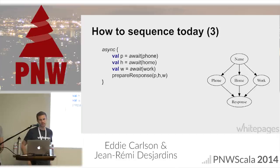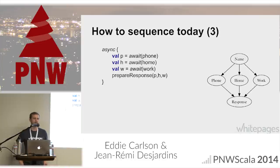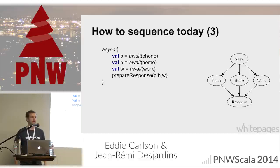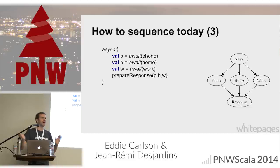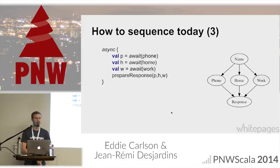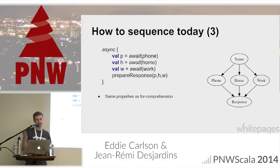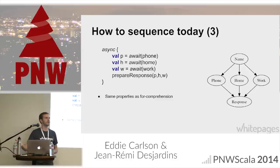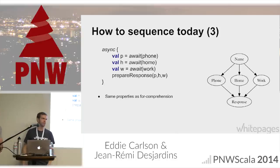The third way to sequence is async/await — a newer deal. The idea is to provide a way to write programs that look sequential but are actually doing concurrent things in the background. It allows you to clean up a lot of your code because flatMap and map aren't littered everywhere; you can grab a value by just awaiting and use it as the actual value. But we have the same problem — it does not fail fast. It has the same properties as the for-comprehension, and this is all implemented with macros. Those are the main ways to sequence today.